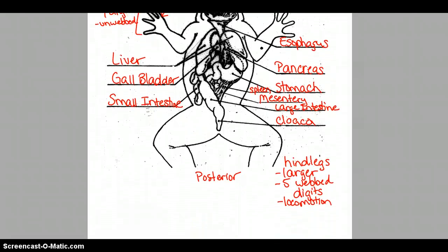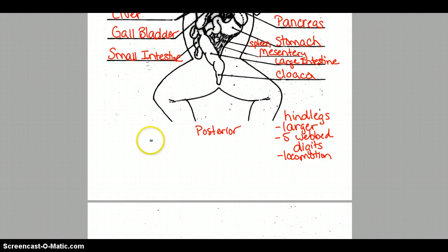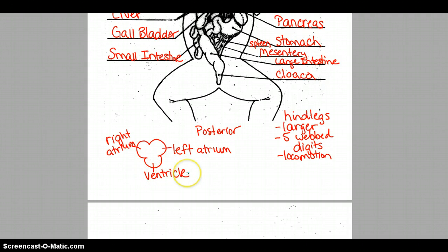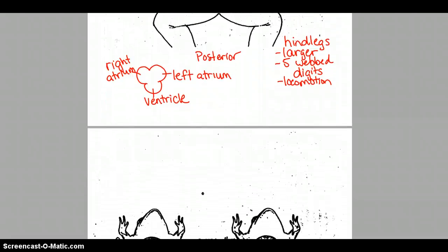Another part that is hard to see on the diagram is the heart. Amphibians have a three-chambered heart. It has a left atrium and a right atrium — the atria collect blood — and a single ventricle whose job is to pump the blood to the rest of the body and to the lungs to get oxygen. Because the frog only has one ventricle there is some mixing of oxygenated and deoxygenated blood, which is not as efficient as completely separating the two types, as seen in the four-chambered heart found in birds, mammals, and some reptiles.